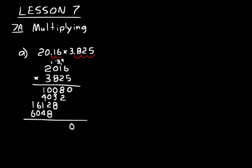Now we add all these together. Working through the addition: we get 0, then carry 1, getting 8, 9, 10, 11, 12 — carry 1 — then 2, 3 plus 8 is 11 — carry 1 — 1 plus 1 is 2, plus 4 is 6; 7 plus 4 is 11 — carry 1 — and 7, and 7. Now we move the decimal places back in: 1, 2, 3, 4, 5. We end up with 77.112. We don't need to put the zeros on the end — we can just say 77.112. That is our product.